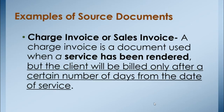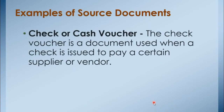The last source document is the check or cash voucher. The check voucher is a document used when a check is issued to pay a certain supplier or vendor. Most of the time, a business will pay its creditors or suppliers through issuance of checks. Financial information about the settlement of obligations and receipt from other entities can be harvested through these source documents for reliable record-keeping purposes.